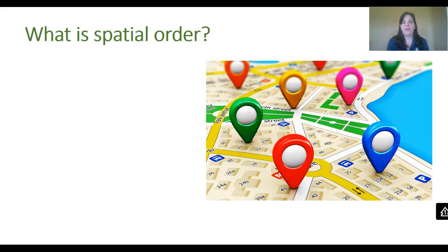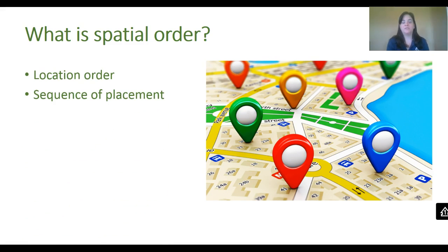Let's begin by defining spatial order. So what is spatial order? This is location order. Spatial order is when you describe things as a sequence of placement — where they are, what they look like, how big or small they are. Spatial order is really good for describing a place.